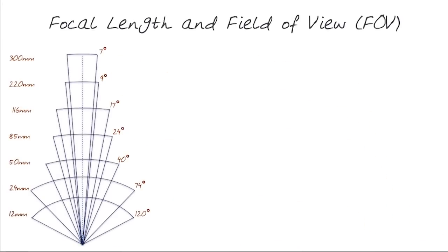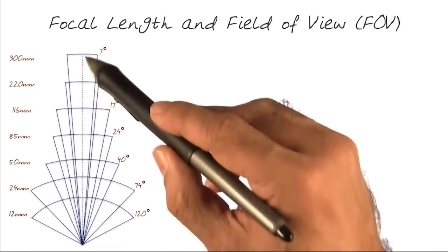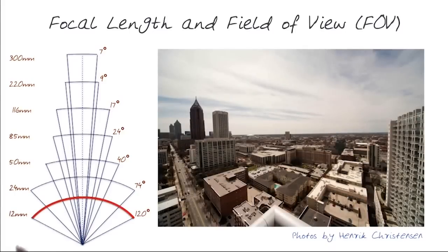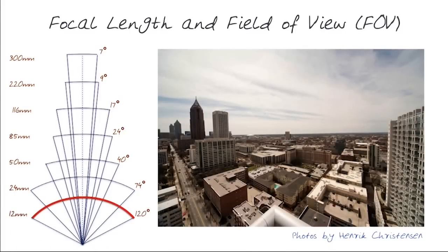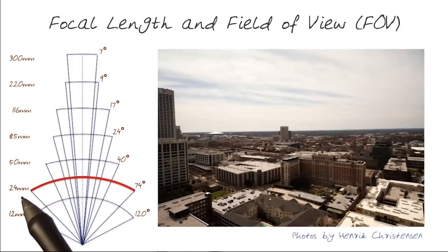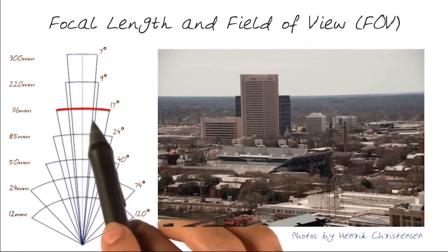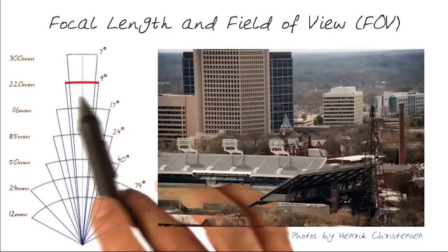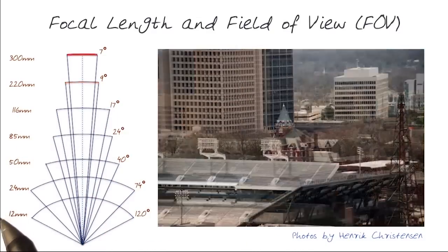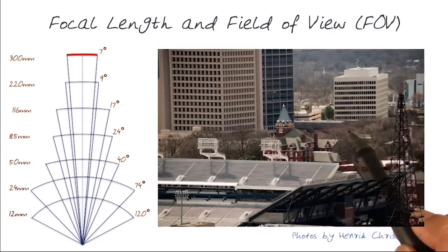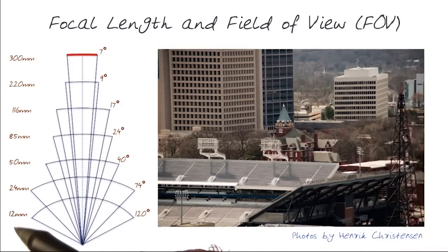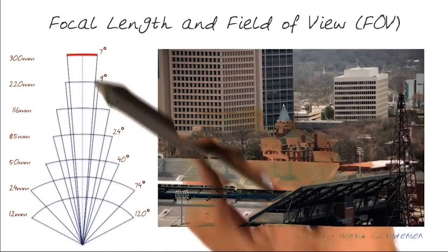Here I'm going to show you the focal length and field of view using this chart. The field of view was 120 degrees horizontal with a 12 millimeter lens. Moving to 24 millimeter gives 74 degrees, 50 millimeter gives 40 degrees, 85 millimeter gives 24 degrees, 116 millimeter gives 17 degrees, 220 millimeter gives 9 degrees, and 300 millimeter gives basically 7 degrees — a much closer viewpoint. It's an interesting way of looking at how we go from 12 millimeters to 300 millimeters and how the field of view changes.